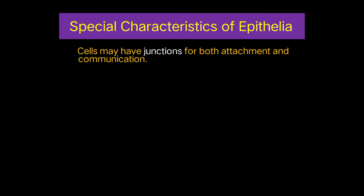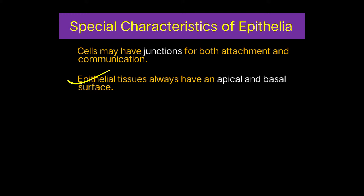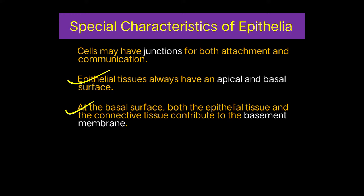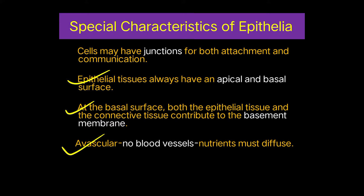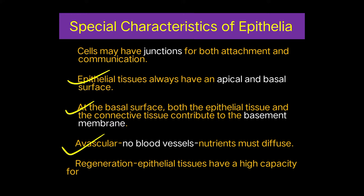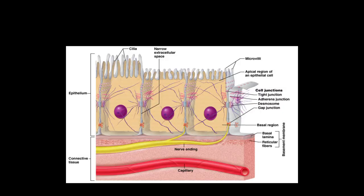Special characteristics of epithelia: cells may have junctions for both attachment and communication. Epithelial tissue always has an apical surface (above) and a basal surface (lower side). At the basal surface, both epithelial and connective tissue contribute to the formation of the basement membrane. Epithelial tissue is avascular — no blood vessels — so nutrients must diffuse through. Epithelial tissue also has a high capacity for regeneration.